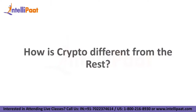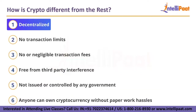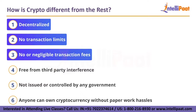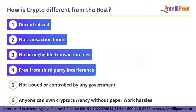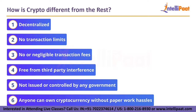How is crypto different from the rest? Cryptocurrencies differ from other online transaction systems and general payment systems in many ways. Cryptocurrencies are decentralized, they have no transaction limits, they have no or negligible transaction fees, they are free from third party interferences, they are not issued or controlled by any government, and anyone can own cryptocurrencies without having to go through the hassles of paperwork.